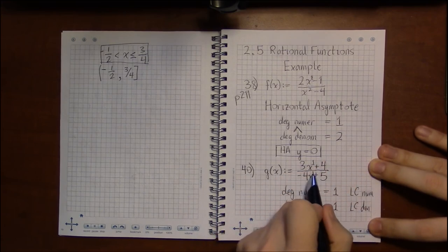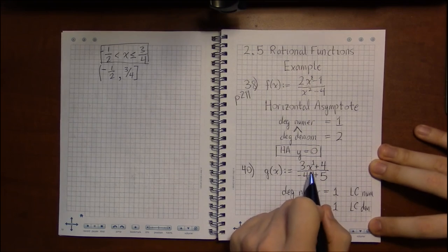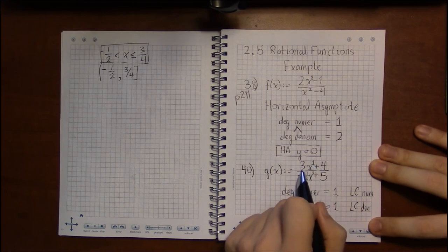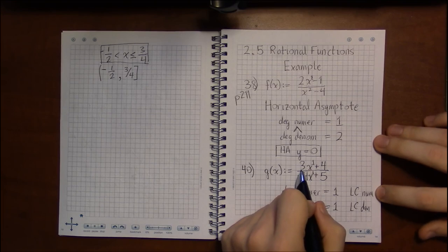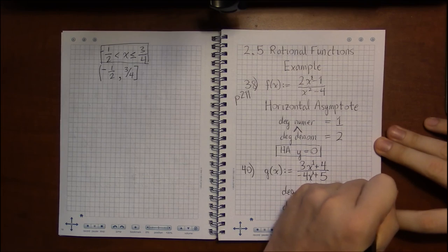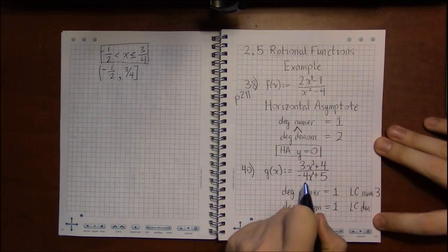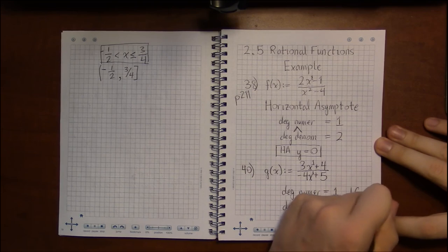So in this case, we look at the x to the 1st terms, the things that gave us our degree, and we look at their coefficients. So the leading coefficient of the numerator is 3, because that's what's multiplying x to the 1st. And the leading coefficient of the denominator is minus 4.